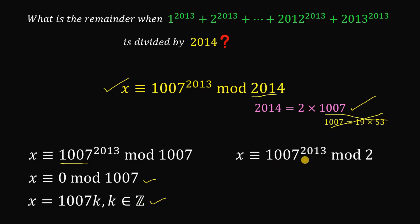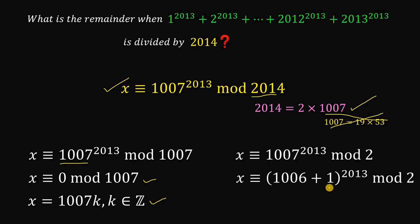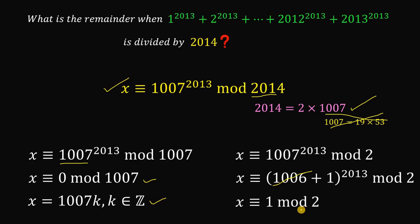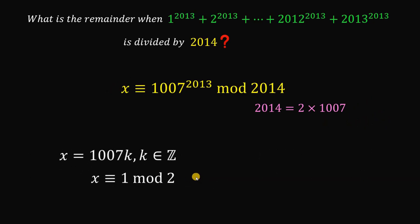On the other hand, x ≡ 1007^2013 (mod 2). We can rewrite 1007 as 1006 + 1. Now 1006 is an even number, so that part is just 0 mod 2. What's left is 1 raised to the power of 2013, which is just 1. So x ≡ 1 (mod 2).